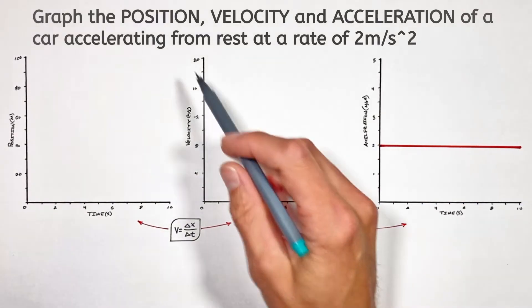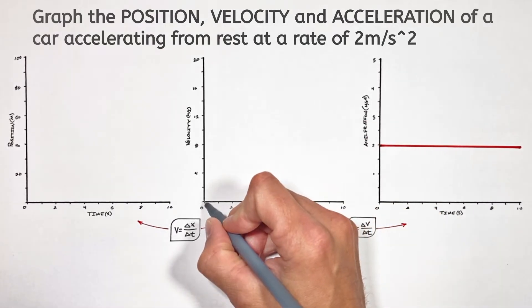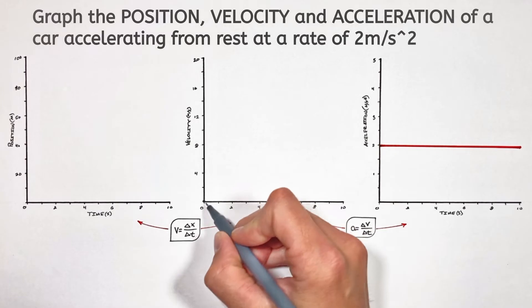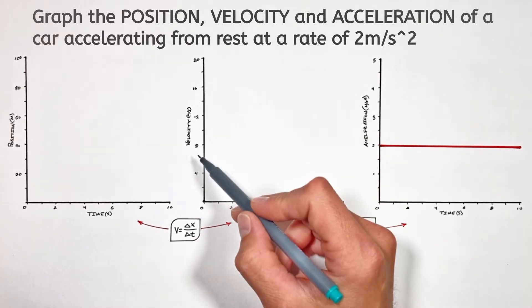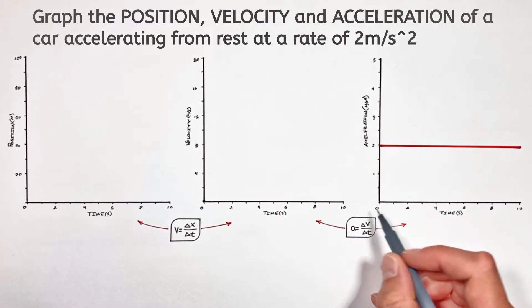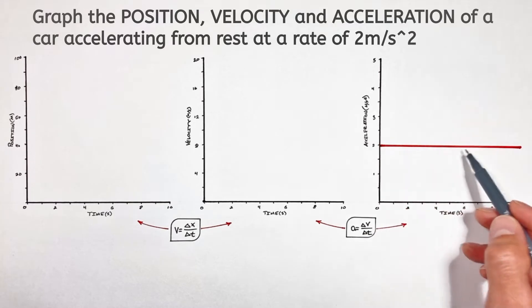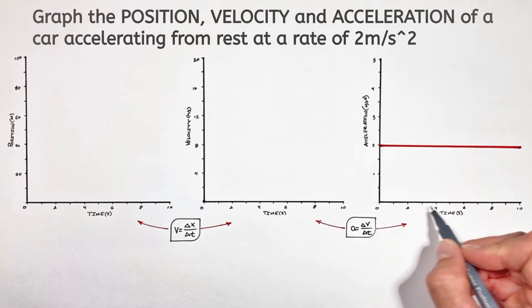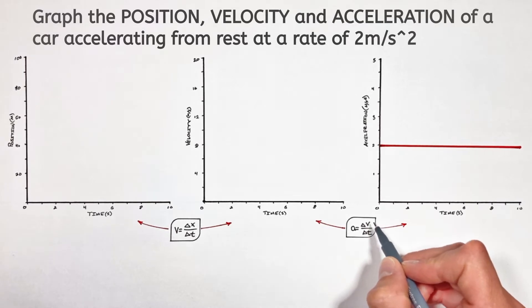Now moving on to velocity, in our problem the car starts from rest, meaning the initial velocity at time 0 is going to be 0. Now as time goes on, that velocity is going to change. And to understand how it's going to change, let's look at acceleration. An acceleration of 2 meters per second squared means that with every second that goes by, there's going to be a change in velocity of 2 meters per second.